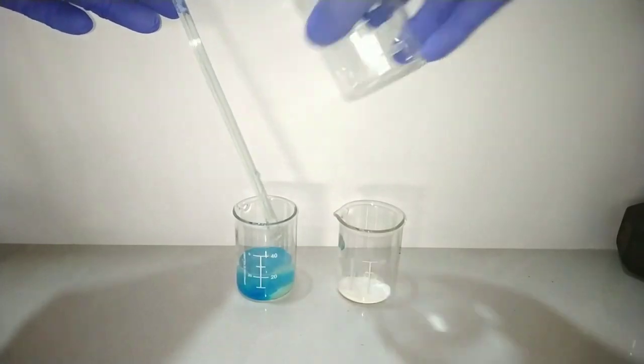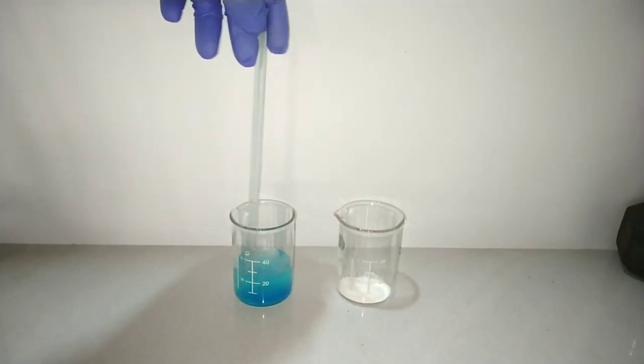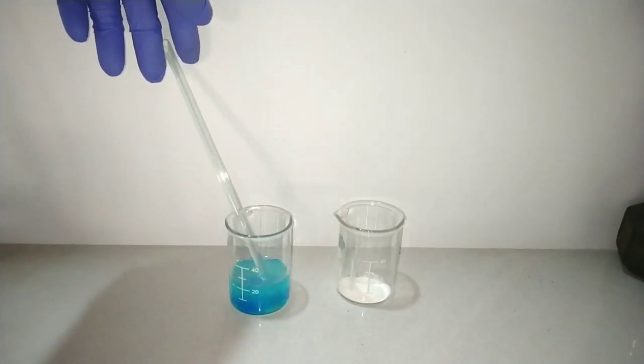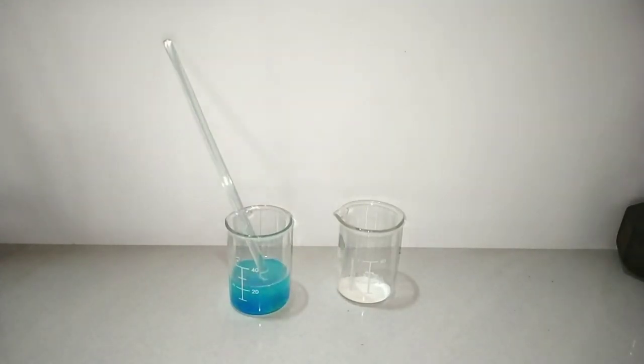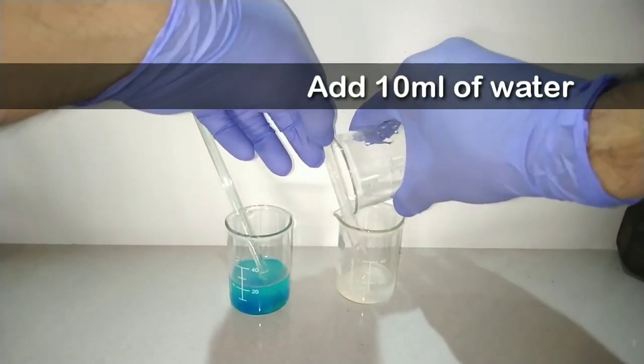We get a nice blue color solution on mixing the copper 2 sulfate. Now we add 10 milliliters of distilled water into the sodium metabisulfite and dissolve that too.